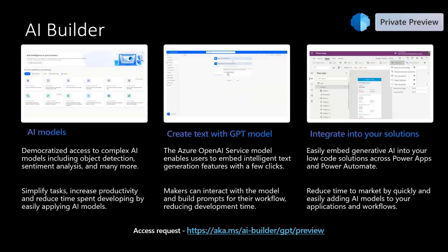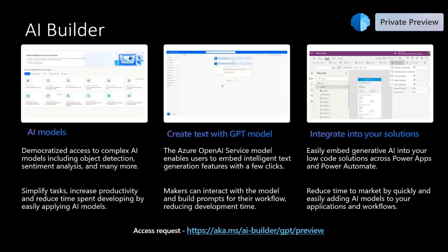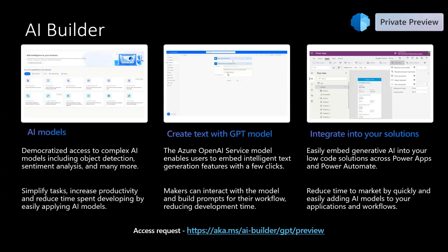We recently added a new GPT-based model called the Azure OpenAI Text Service Model to this list of existing AI Builder models. This new GPT-based model enables users to embed intelligent text generation features with just a few clicks. This model can be used in Power Apps and Power Automate for tasks like summarization of text, extraction of details from text, translation, sentiment analysis, and categorization of text.